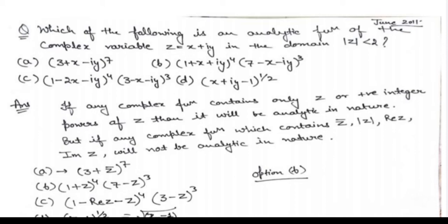For getting the answer easily, you need to know one thing: if a positive integer power of z — where z = x + iota y — is present in any given function, then we can say the function is analytic. If the negative power of z, or the fractional power of z (like z to the power 1/2), is present, or if only the real part of z alone is present, or if the complex conjugate of z (z-bar) is present, then the function is not analytic.